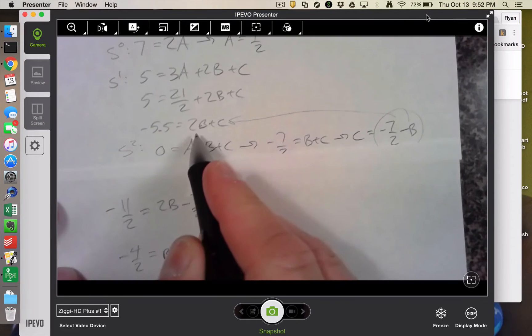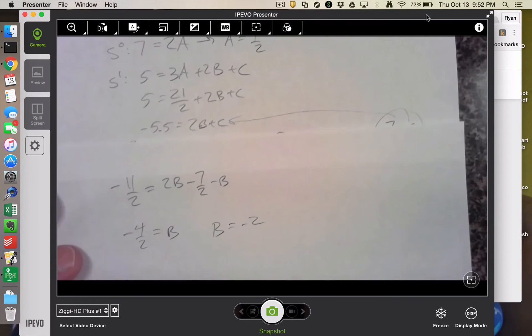And if I took that back into this equation, if a negative 11 halves is equal to a negative 4 plus c, well, this is a negative 8 halves. So c must be a negative 3 halves.